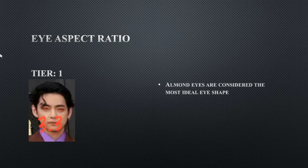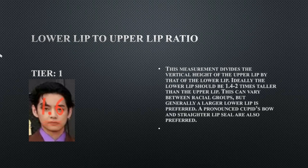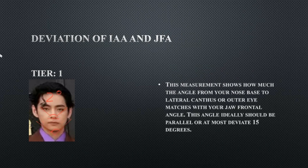His eye aspect ratio is 3.3 — he does have almond-shaped eyes, which is perfect. His lower lip to upper lip ratio is 1.6, which is within the ideal range of 1.4 to 2, meaning his upper lip is slightly smaller than his bottom lip as preferred. His deviation from the infraorbital alar angle and the jaw frontal angle is two degrees, which is perfect.